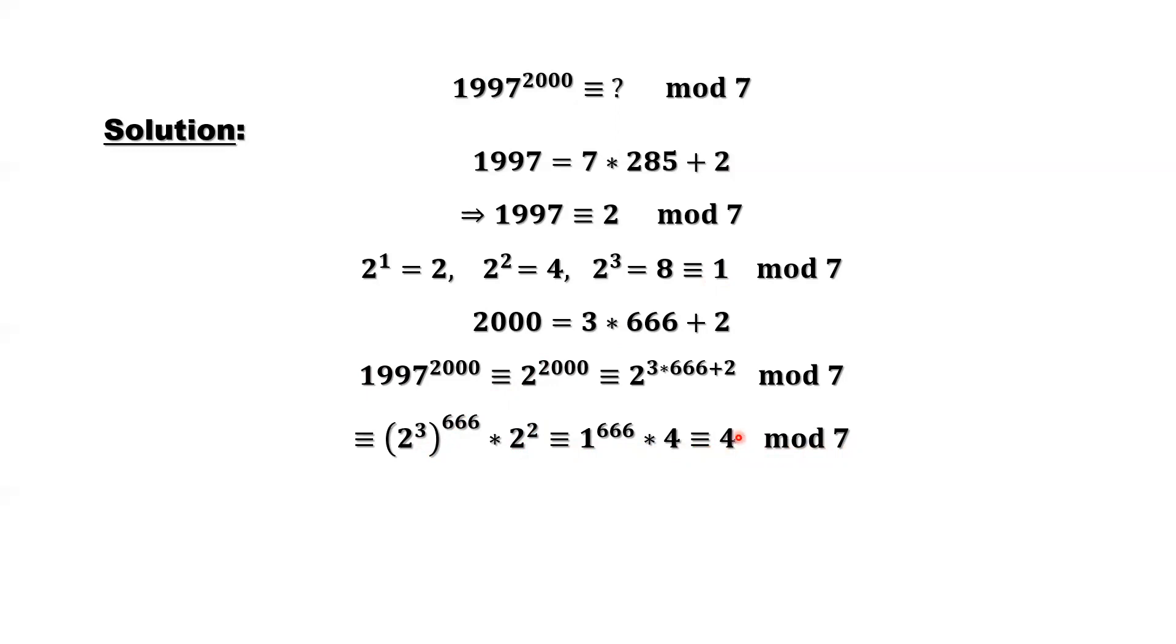So here is our conclusion. To find the remainder of this is the same as finding the remainder of 4 divided by 7. That's the final result, the remainder is 4.